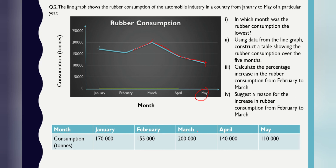Using data from the line graph, construct a table showing the rubber consumption over the five months: January, February, March, April, and May. Calculate the percentage increase in rubber consumption from February to March. I will make another video for this lesson — for now, I'm just showing how you can work with different types of graphs.